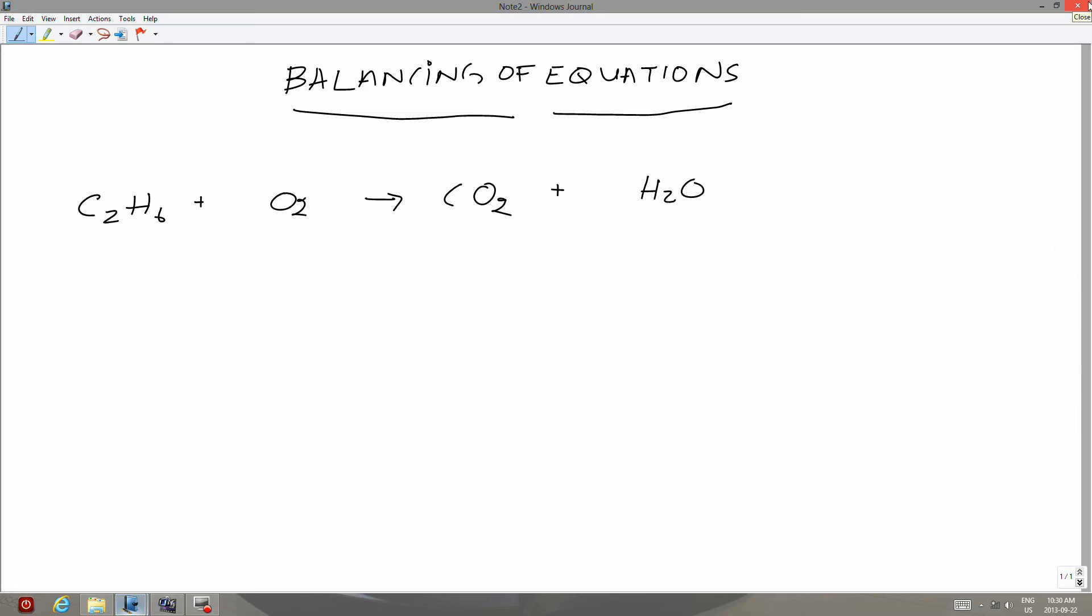I'm going to pick carbon in this case, and I'm going to balance carbon on the left and the right. So if you look on the left, I have two carbons. So I'm going to put a two on the right. So the number of carbon atoms on the left and the right are balanced.